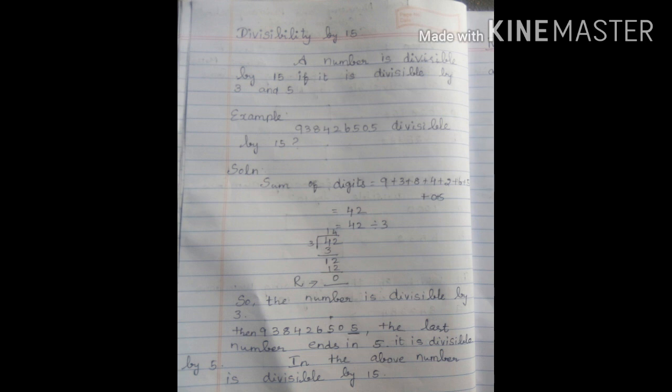For rule 3, we find the sum of the digits and divide by 3. The remainder value should be 0. Write the solution: sum of the digits — 9 plus 3 plus 8 plus 4 plus 2 plus 6 plus 5 plus 0 plus 5 equals 42. So 42 divided by 3: the remainder value is 0, so the number is divisible by 3.